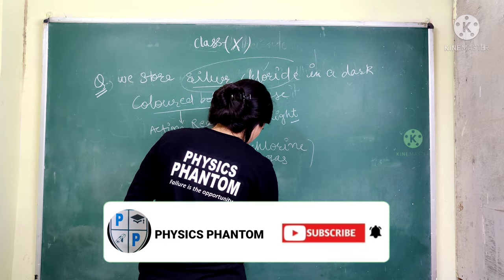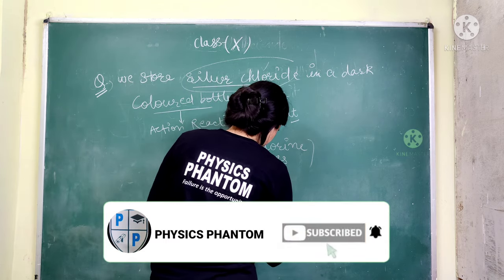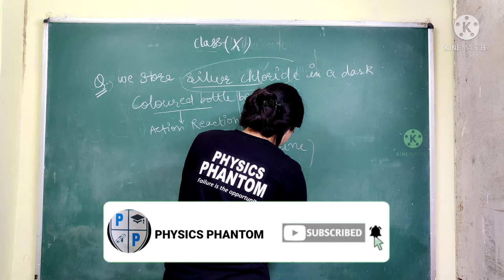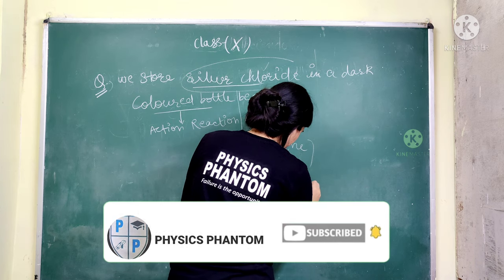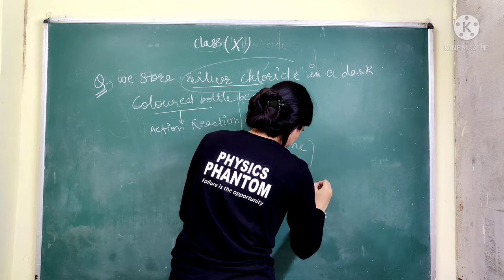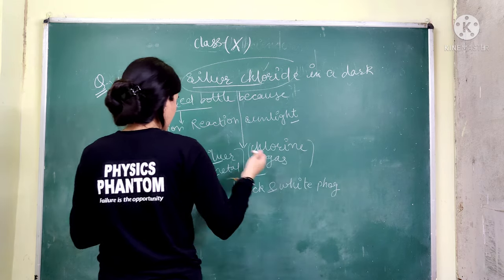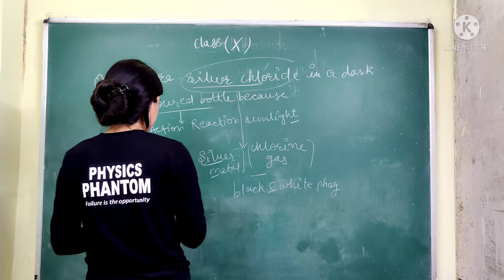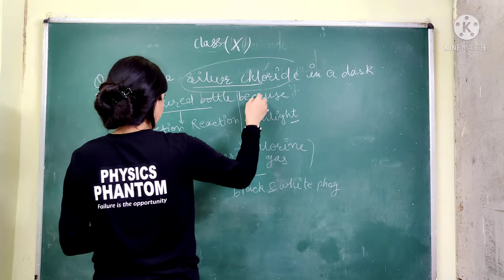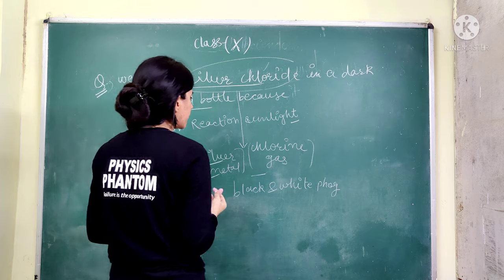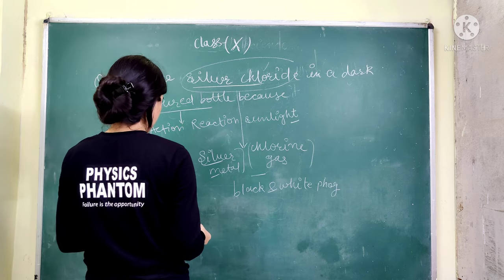This question is important for competitive exams. The reason silver chloride is stored in dark-colored bottles is because silver chloride ions are highly sensitive to sunlight.